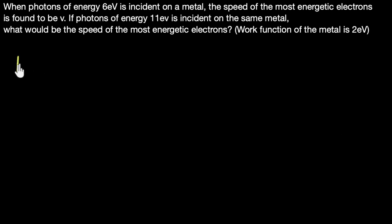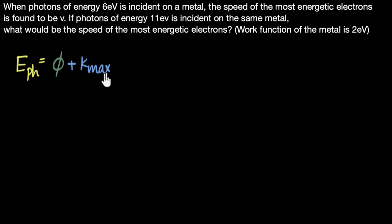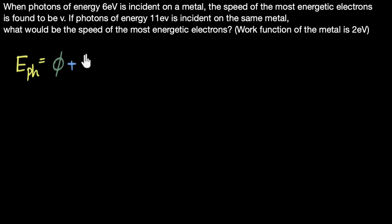Let's do this. I start with the photoelectric equation: energy of the photon equals the work function plus the maximum kinetic energy. The energy of the photons is given, the work function is given, and we are asked to calculate the speed. So let's convert kinetic energy into speed: K equals half MV squared, so this becomes half M V_max squared. Now I can plug in values for the first and second case and compare.